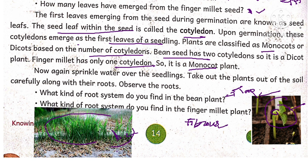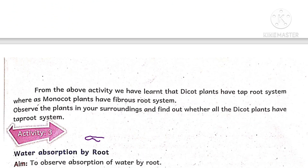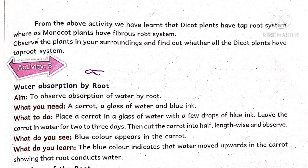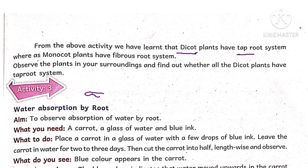Examples of monocots are paddy, wheat, and other food grains. Examples of dicot plants are beans, groundnut, black gram, and green gram. From the above activity, we have learnt that dicot plants have a taproot system and monocot plants have a fibrous root system. Observe the plants in your surroundings and you will find that all dicot plants also have a taproot system.